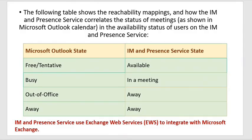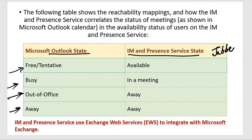This table shows the presence status mapping. If you have meetings or are on a one-to-one call, it shows how Jabber represents your presence status. The different status types are: Free, Tentative, Busy, Out of Office, and Away. These correspond to Outlook calendar states. On the IM&P side, Jabber shows: Available, In a Meeting, Away, or Away for Out of Office. IM&P uses Exchange Web Services to integrate with Exchange Server.